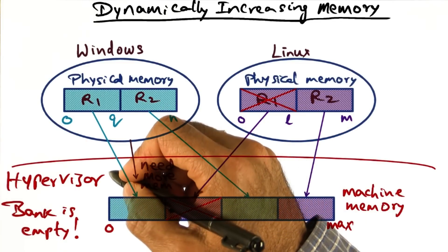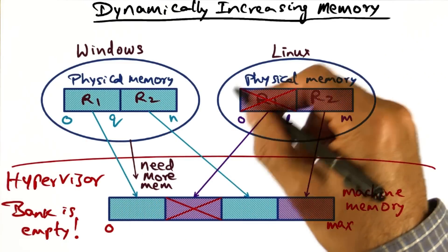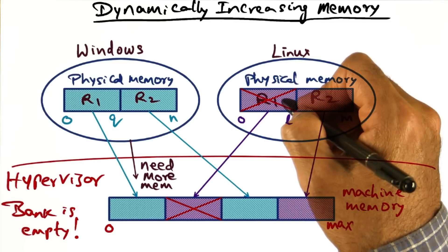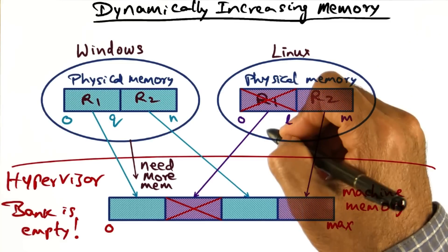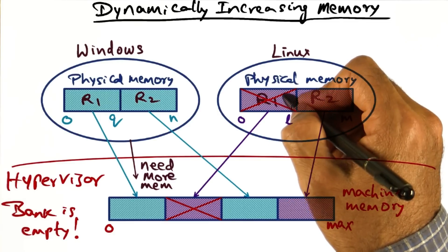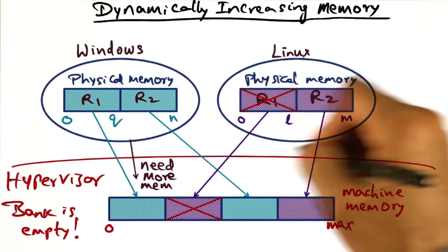What the hypervisor could do is recognize that maybe this operating system doesn't need all of the physical resources I allocated it. So I'm going to grab back a portion of the physical memory that Linux has.